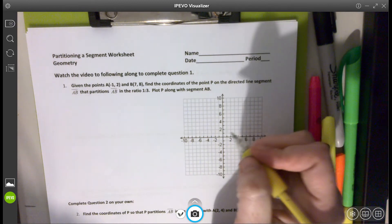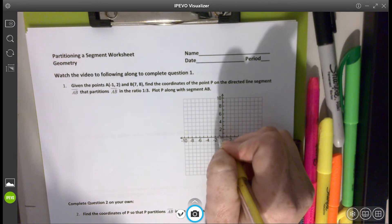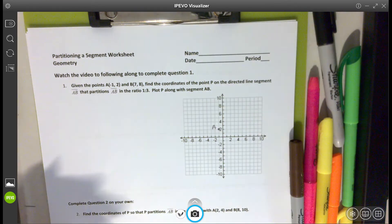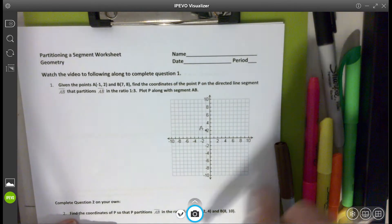So A is at negative one, two. All right, and then B is at seven, eight.